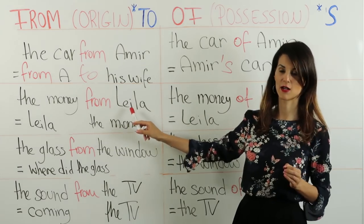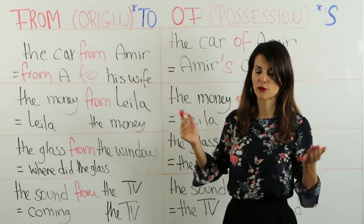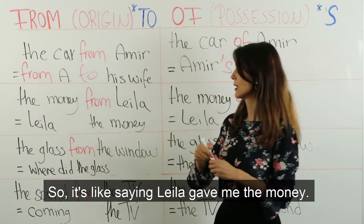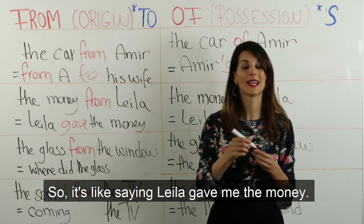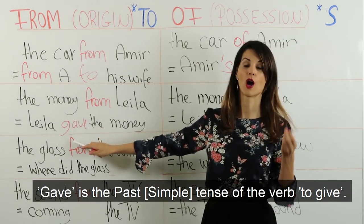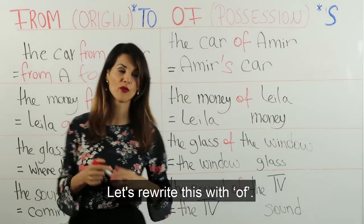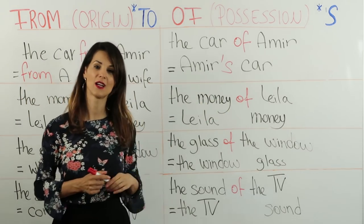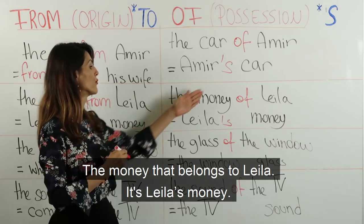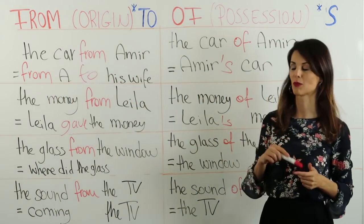Let's look at another example. 'The money from Leila' — where did the money come from? It came from Leila. من وين أجت الفلوس؟ من Leila. So it's like saying Leila gave me the money. كأني عمقول ليلى عطيتني الفلوس. Gave is the past tense for the verb 'to give'. Let's rewrite this with 'of': 'The money of Leila' — the money that belongs to Leila. It's Leila's money. هون عم نحكي عن فلوس Leila. The money of Leila equals Leila's money. هالجملتين تلينيتون بيعنو فلوس Leila.